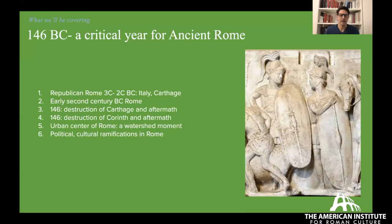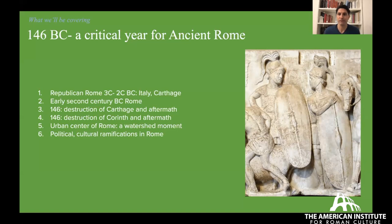Here's what we're going to be covering: what happens before 146 BC, particularly a review of the 3rd and 2nd centuries BC leading up to the destruction of Carthage. We'll hone in on the early 2nd century BC, covering episodes leading up to the ultimate annihilation of Rome's great rival in the western half of the Mediterranean. Then we'll turn to the actual destruction of Carthage and pivot over to the east to see how these things are all interrelated.